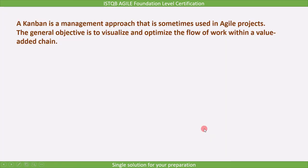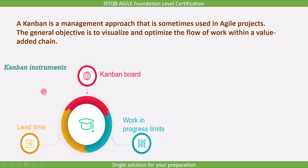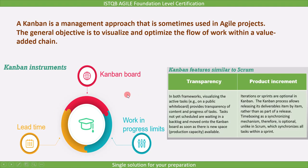To summarize: Kanban is a management approach that is sometimes used in Agile projects. Kanban utilizes three instruments — Kanban board, work-in-progress limits, and lead time. Kanban also features some similarities to Scrum, like transparency and releasing item by item.